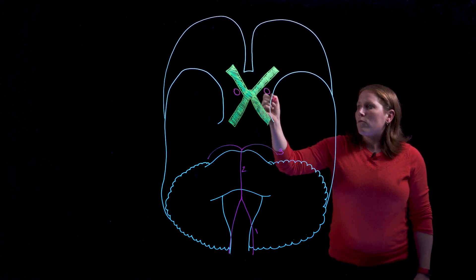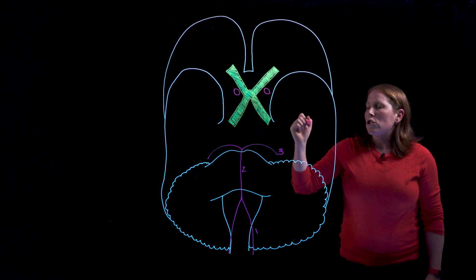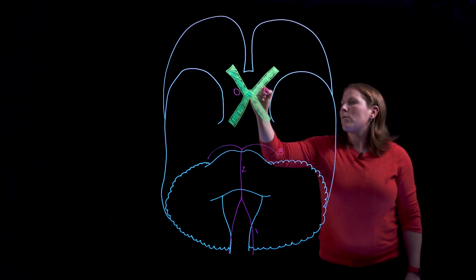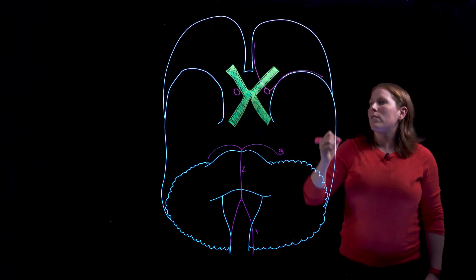Almost immediately at this point right near the optic chiasm the internal carotid arteries are each going to split and so we're going to draw their resulting branches one this way and one this way.